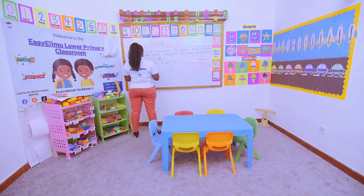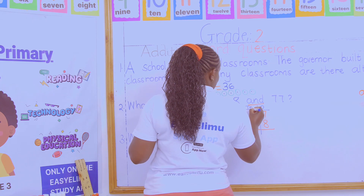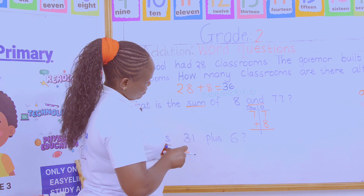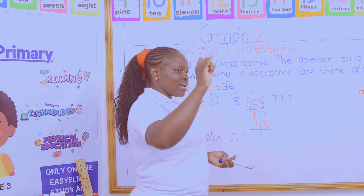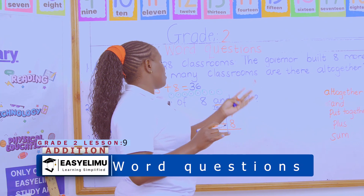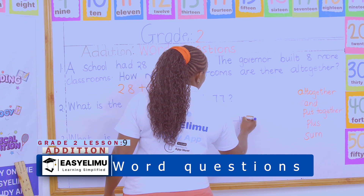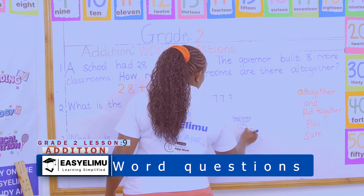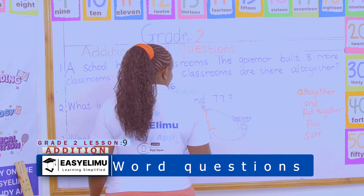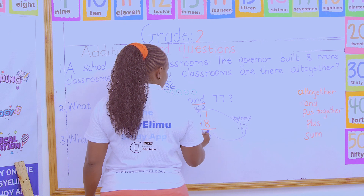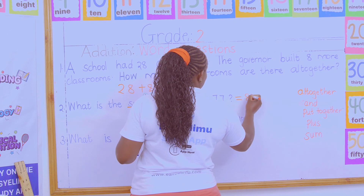First, we show the ones and the tens. We add the ones first: 7 plus 8. Put 8 in the head, 7 fingers out — counting on gives us 15. When you get 15, regroup: the 5 ones come to the ones column, and the 1 ten goes to the tens column. Then 7 plus 1 becomes 8 in the tens. So what is the sum of 8 and 77? The answer is 85. Remember to show your working.